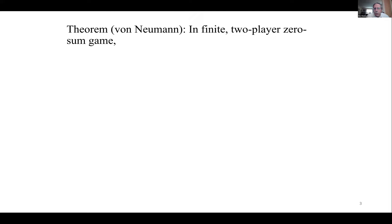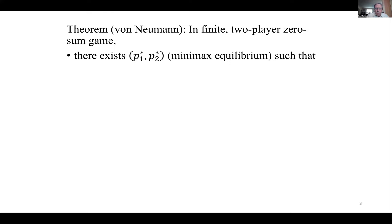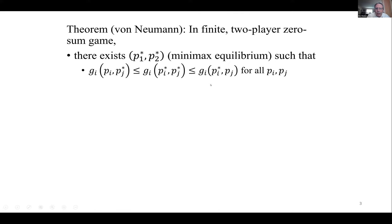Let me remind you of the minimax theorem due to von Neumann. In a two-player zero-sum game — where zero-sum means payoffs add up to zero, so if I win you lose — there will exist a pair of strategies, one for each player, satisfying the saddle point property. If I deviate from my equilibrium strategy, my payoff goes down — that's just the Nash equilibrium property. If you deviate, my payoff goes up, which follows from the zero-sum property.